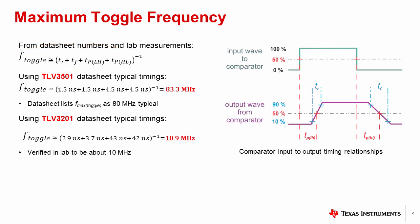For example, if we use the TLV3501 timing parameters, we can calculate an approximate maximum toggle frequency of 83.3 megahertz. The datasheet gives a value of 80 megahertz, quite close to our calculation.